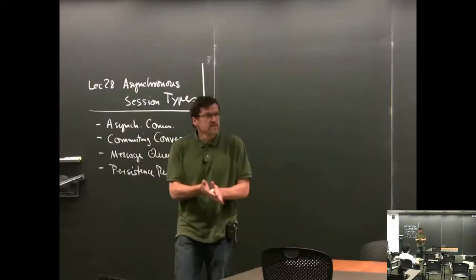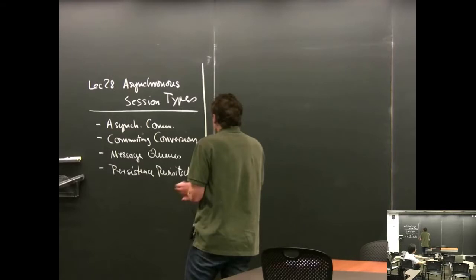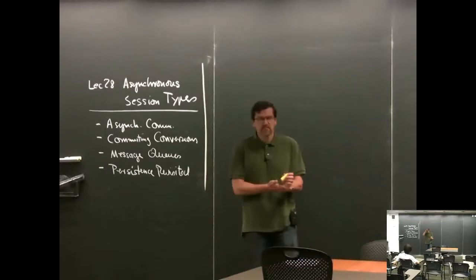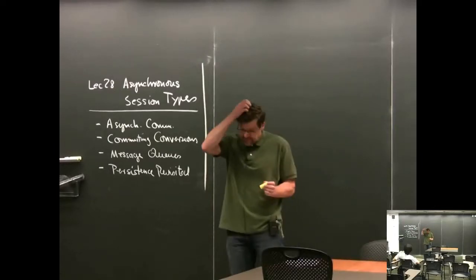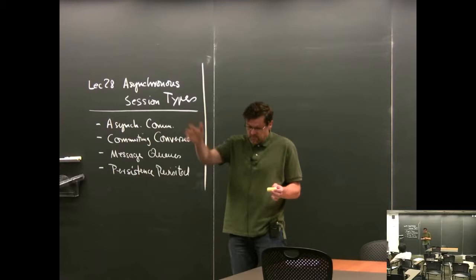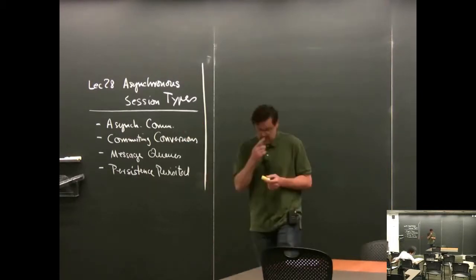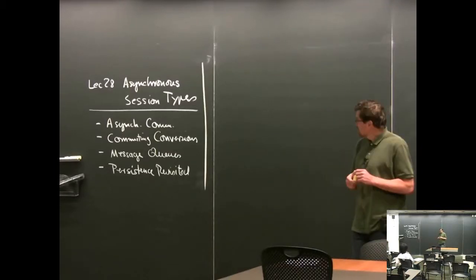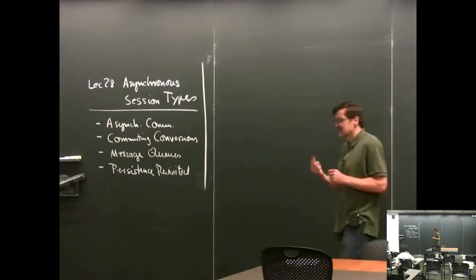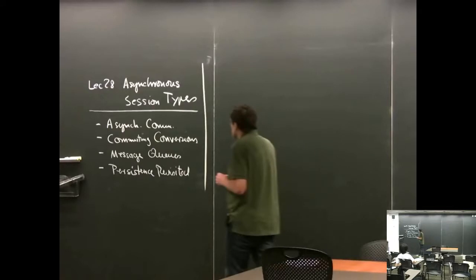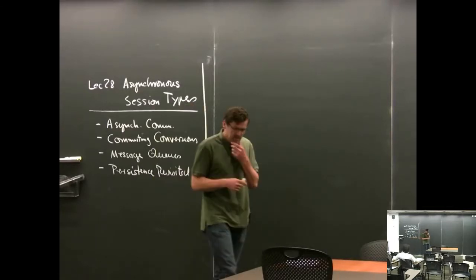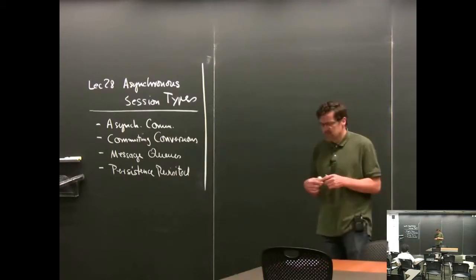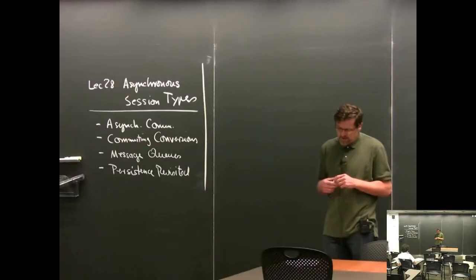Let's get started with lecture. So I decided to go back to what we did at the very beginning — the second major topic we discussed after inference rules and basics of logic — which is the computation and interpretation of linear logic proofs as session types in the pi calculus. I think it's useful because it reminds you of what we did back then, which will be useful for the final.